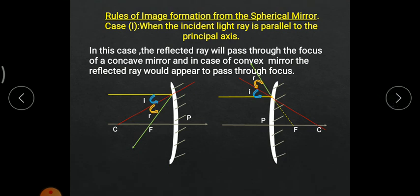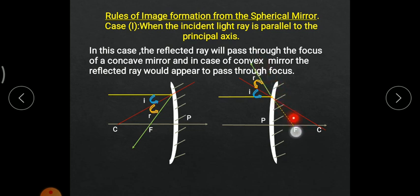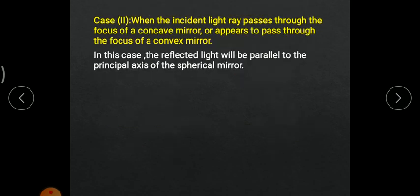In short, whenever we have two mirrors — concave and convex — whenever parallel rays of light hit a concave mirror, they will always pass through focus. Whenever in terms of a convex mirror a parallel incident ray of light is parallel to the principal axis, the reflected ray would appear to pass through focus. Now let us discuss the second rule.